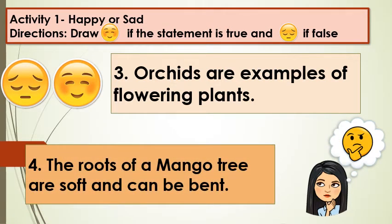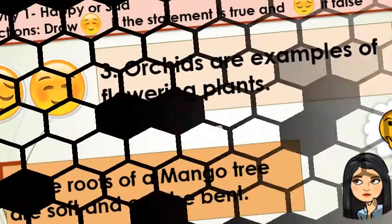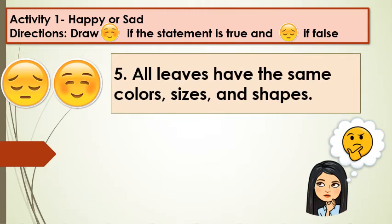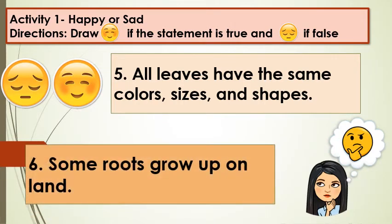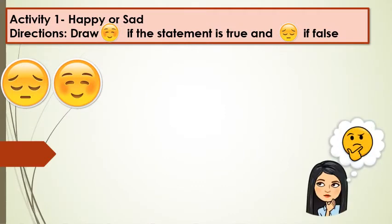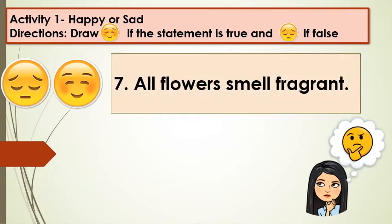Number 4: The roots of a mango tree are soft and can be bent. Number 5: All leaves have the same colors, sizes, and shapes. Number 6: Some roots grow up on land. Number 7: All flowers smell fragrant.